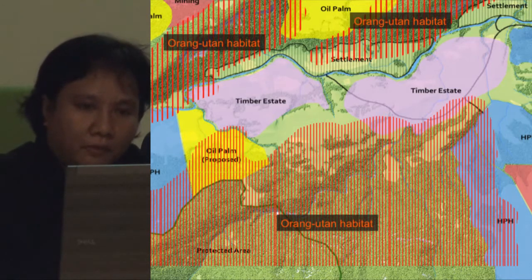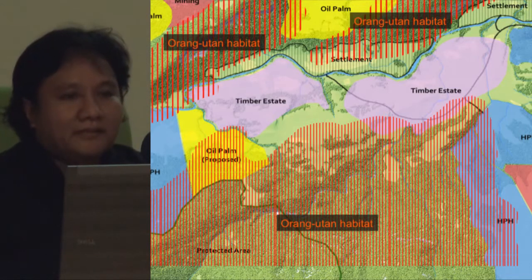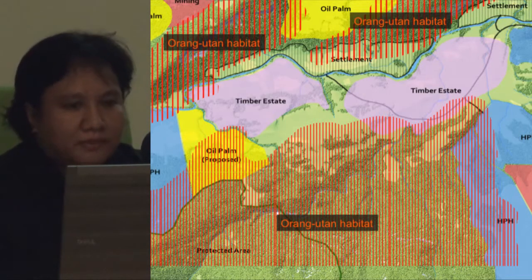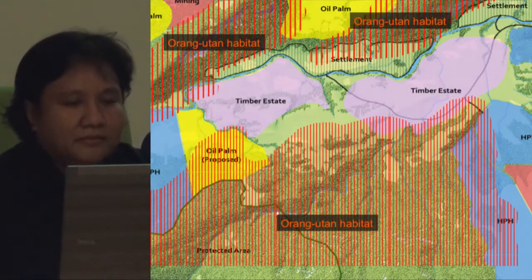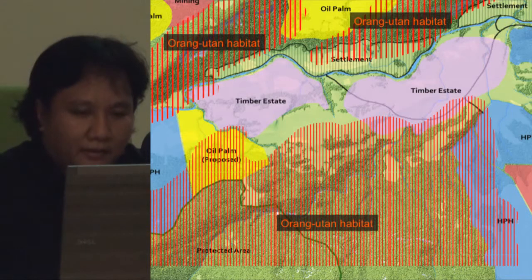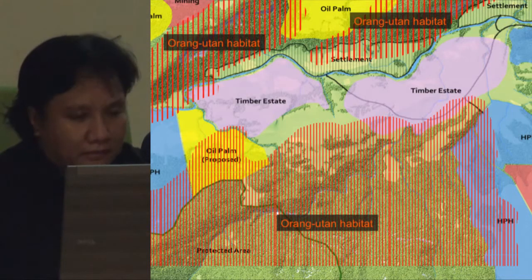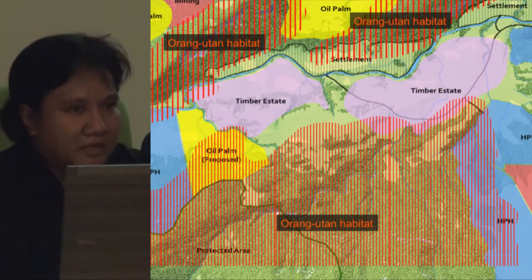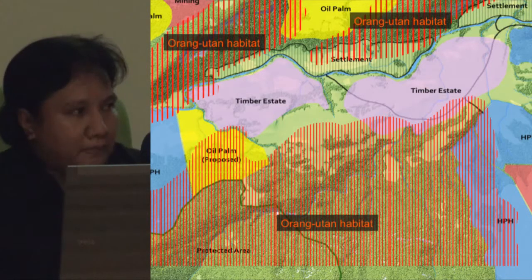Orangutan habitat overlaps with oil palm settlements, mining, timber estates, and proposed oil palm areas. In the Barito area, there is no protected area at all — every single step you take contains either mining, coal, or potential for oil palm development.